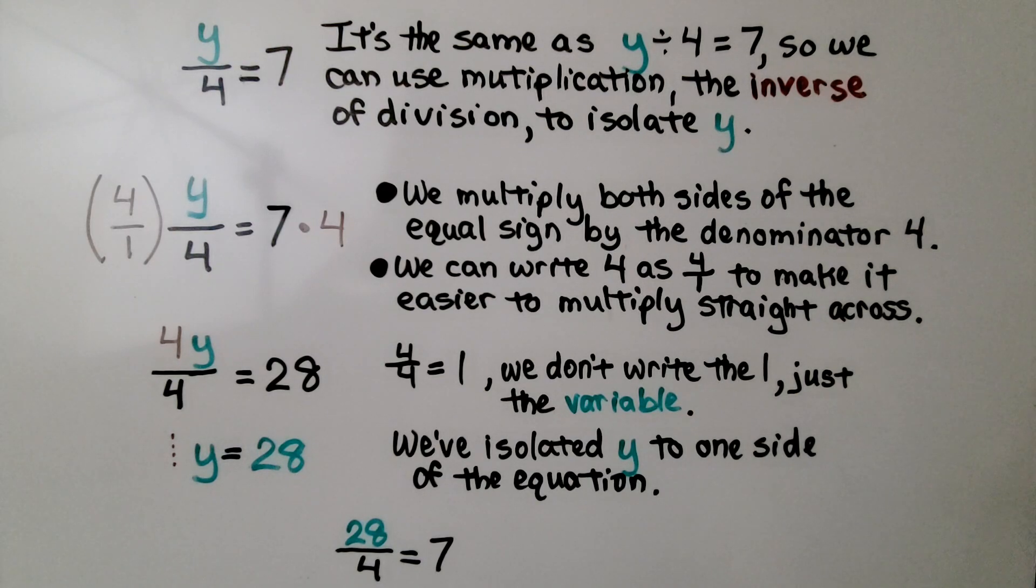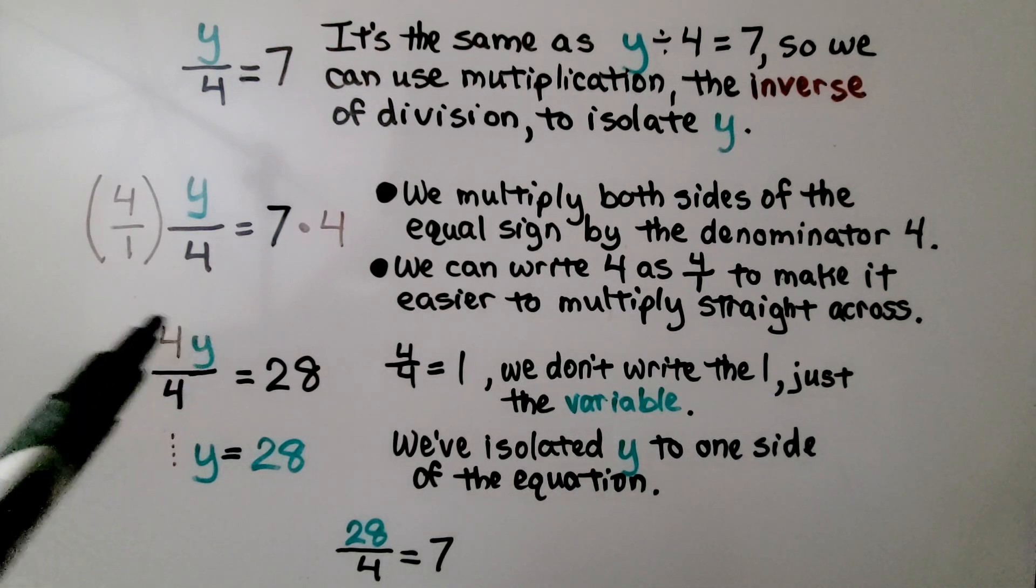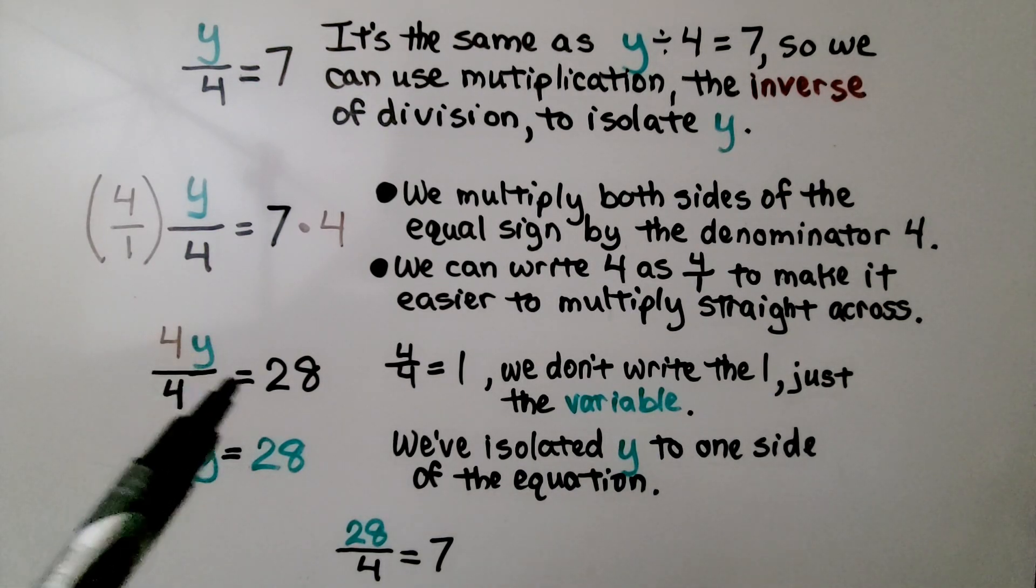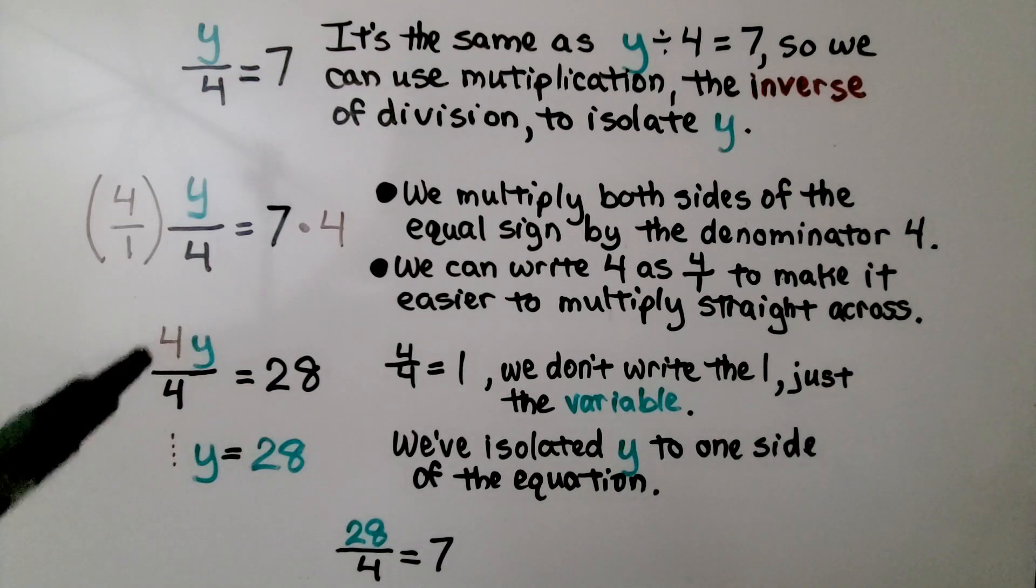We multiply both sides of the equal sign by the denominator 4. We can write 4 as a 4 over 1 to make it easier to multiply straight across. We get 4y over 4 is equal to 28, and we have a 4 over a 4. That's equal to 1.